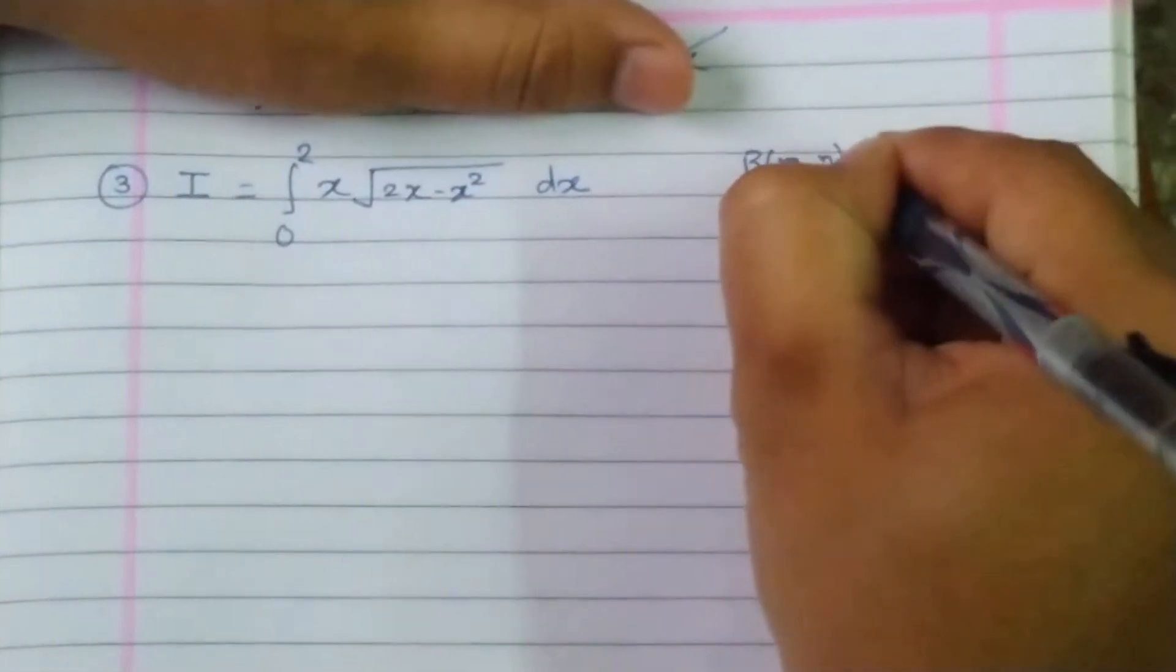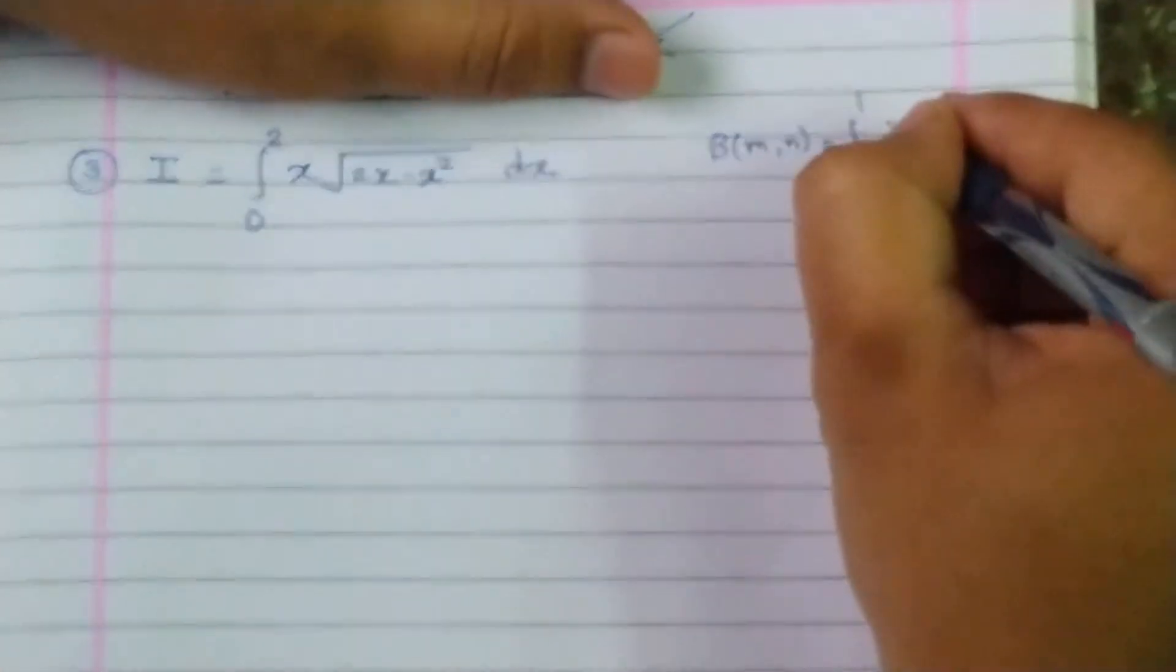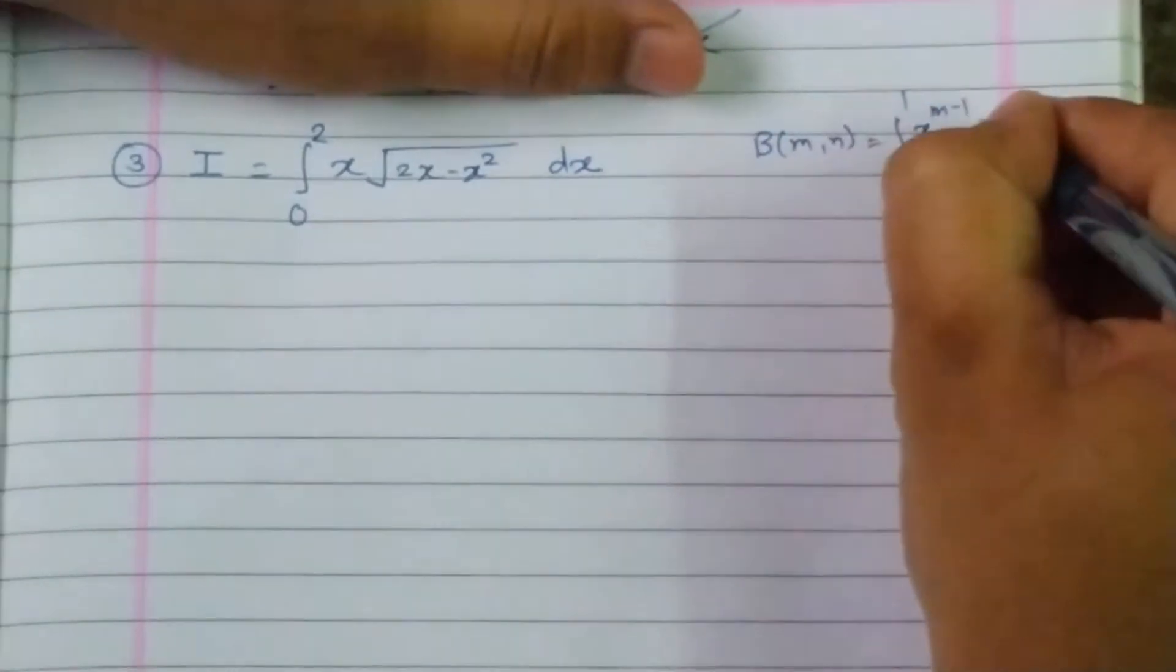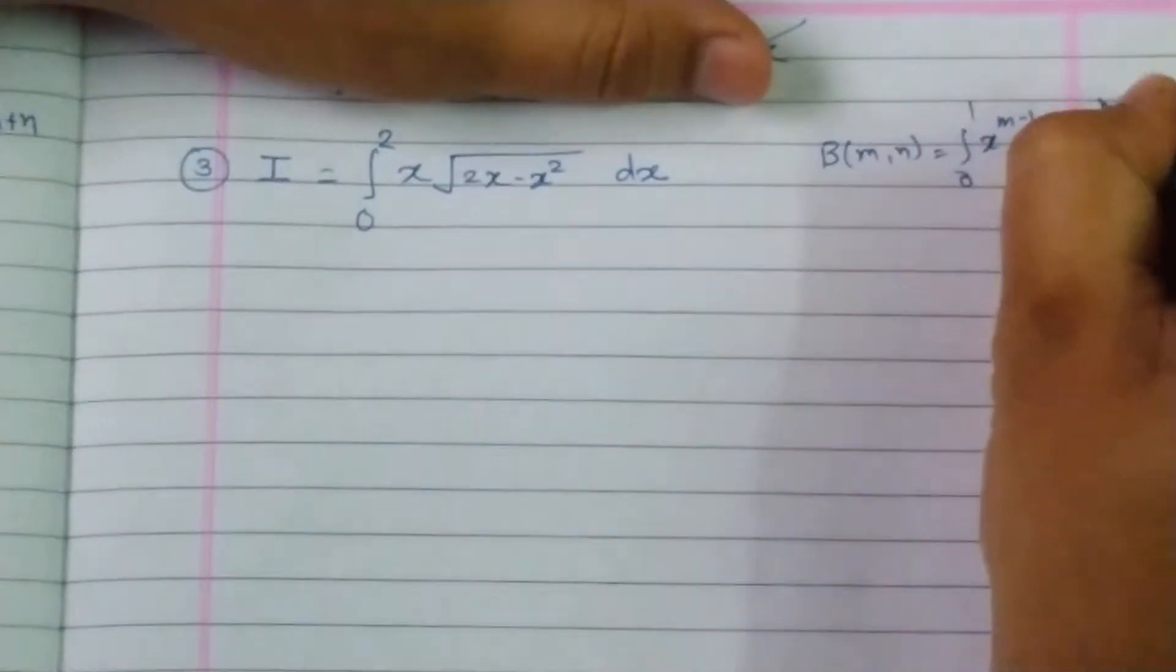Okay, let's come to the definition of beta function first. Beta of m,n is integration from 0 to 1, x raise to m minus 1, times 1 minus x raise to n minus 1, dx.